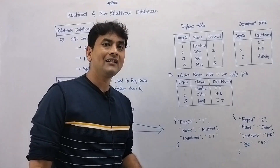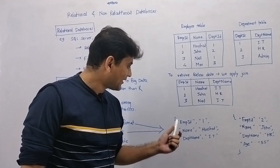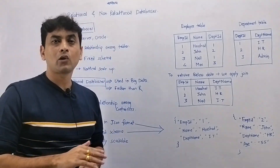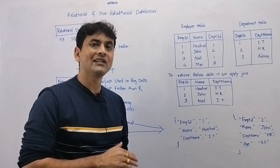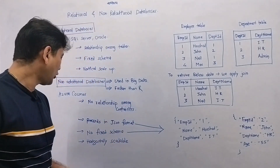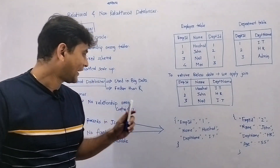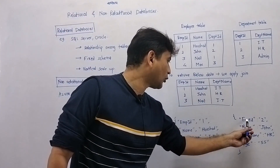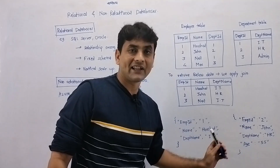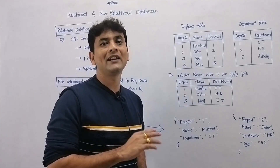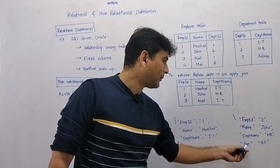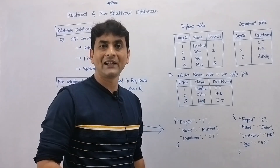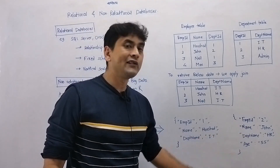We have two records in our Azure Cosmos Database and these are valid JSONs. The first and most important thing is we can store any record in Azure Cosmos Database — the only requirement is it should be a valid JSON. There is no fixed schema, so in the first record we have employee ID, name, and department name, but in the second record we have employee ID, name, department name, and age as well. We can add any property — even irrelevant ones — as long as the record is a valid JSON.